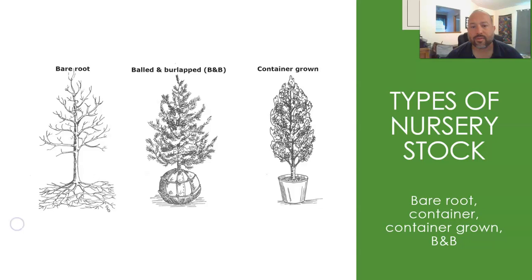There are three types of nursery stock: bare root, balled and burlapped, and container grown. Some sources separate container-grown into 'container' and 'container-grown,' but most commonly we just talk about these three. Let's go over the differences between them.